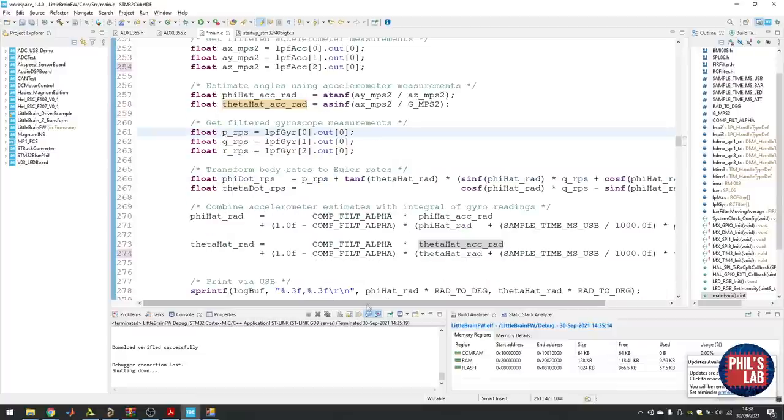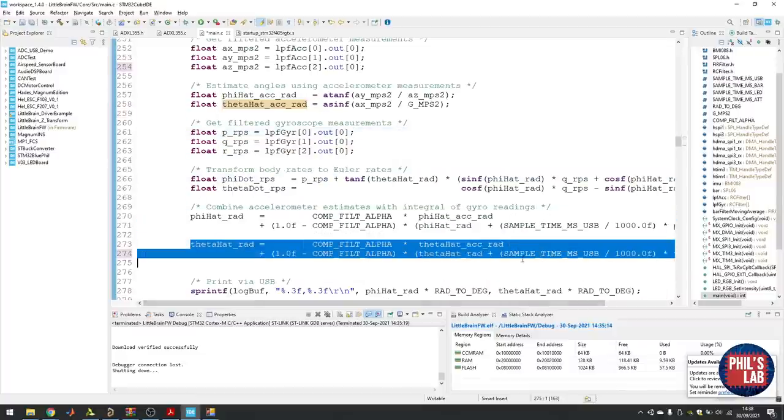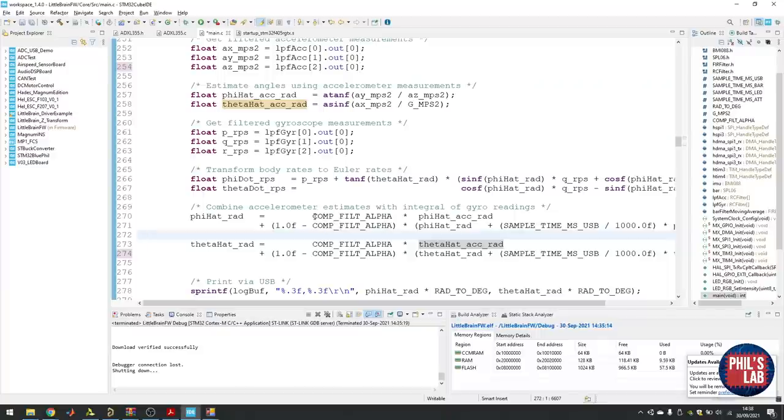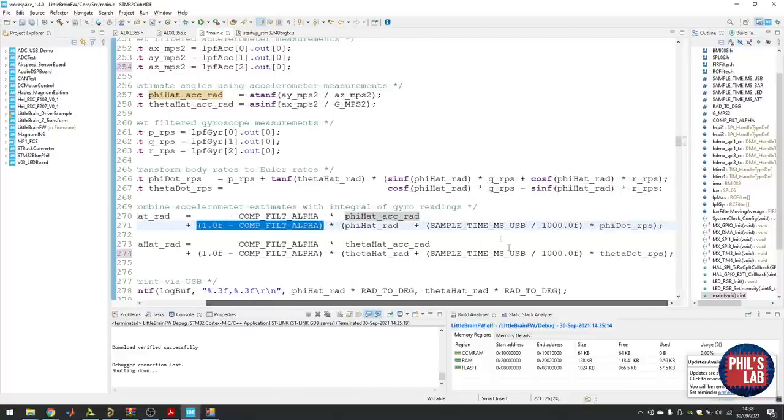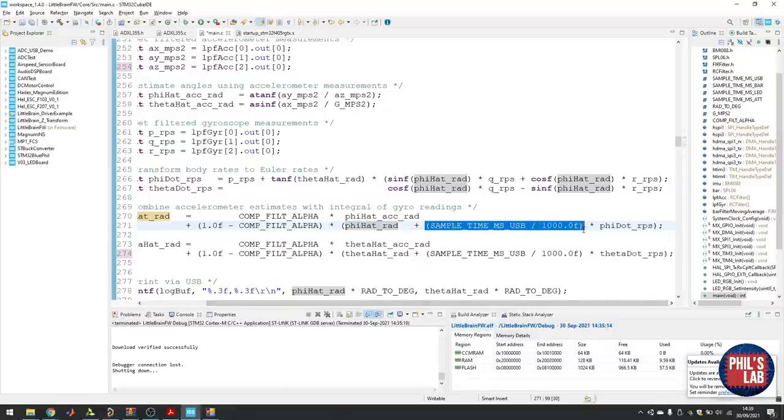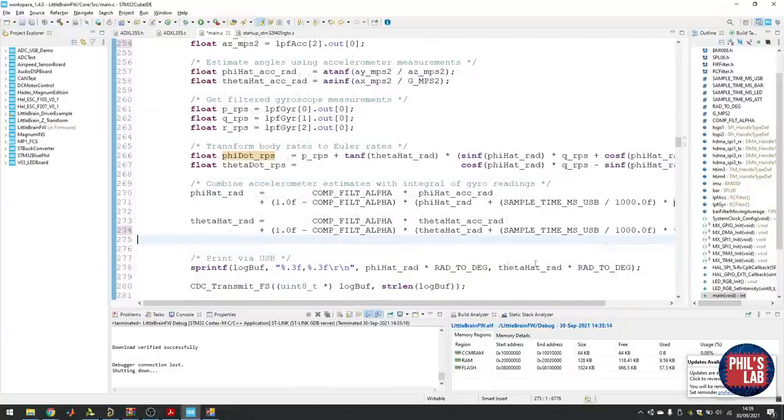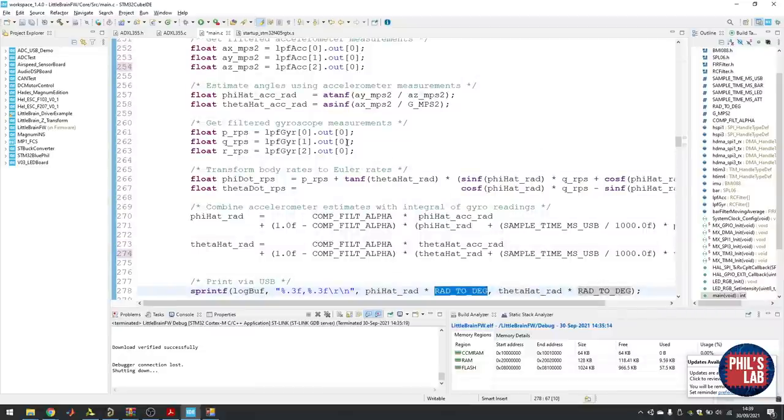Now here comes the actual complementary filter part, once for the roll angle and once for the pitch angle. All I'm doing is implementing this equation. An angle estimate is some combination of the accelerometer estimate plus the integral of the gyro. I have my complementary filter alpha times my accelerometer angle estimate, and the complement of my alpha, one minus alpha, times the integral of my gyro—my previous complementary filter estimate added to the sample time t in seconds times my Euler rate of the roll and pitch angles. That's really all there is to it. Then I print the results via the virtual COM port, transforming radians to degrees. All previous calculations were in radians.